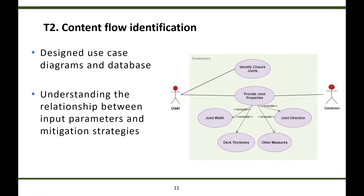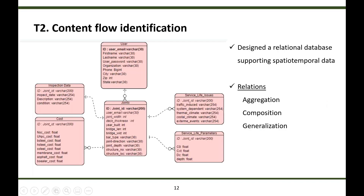Under task 2, we designed use case diagrams to understand the relation between input parameters and mitigation strategies. The user is the primary actor who initiates the system, and the database is the secondary actor that provides necessary details to process the request. The user selects the closure joint types and properties such as joint width, deck thickness, and other measures.